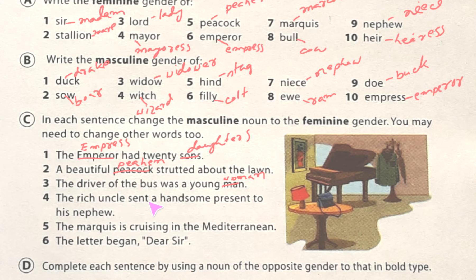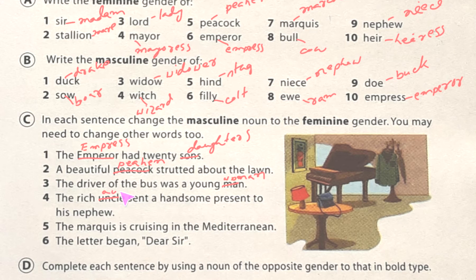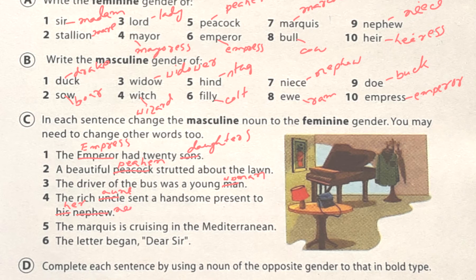'The rich uncle sent a handsome present to his nephew.' Here uncle becomes aunt, his becomes her, and nephew becomes niece: 'The rich aunt sent a handsome present to her niece.'